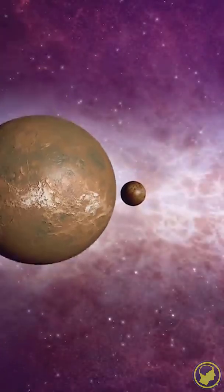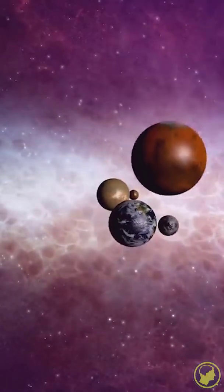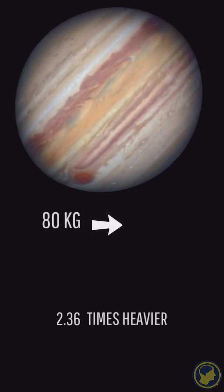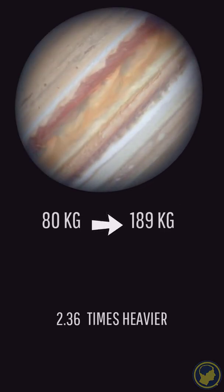So which planet do you think we weigh the most on? You probably guessed it right. On Jupiter's surface, our imaginary 176 pound body would weigh 416 pounds. That is, you would be more than twice as heavy.